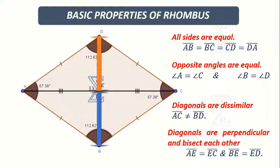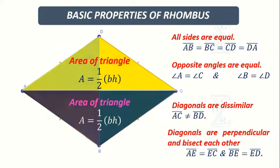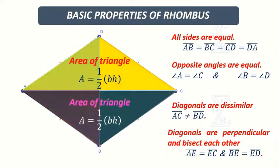To prove the area of rhombus, we use either four right angle triangles or two acute angle triangles. Note, the area of triangle is the product of half, base, and height.